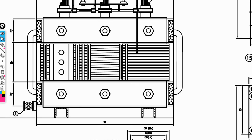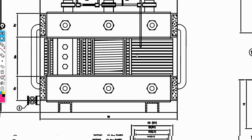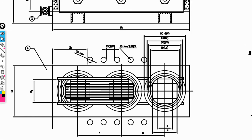This is the cross-section of the transformer winding — the primary winding is here, the secondary winding is here. In this, we need to place the core — that is, the cross-section of the core — which is placed here.